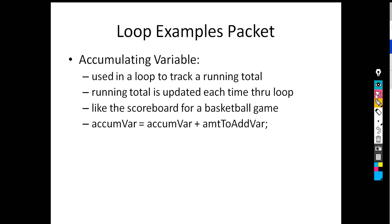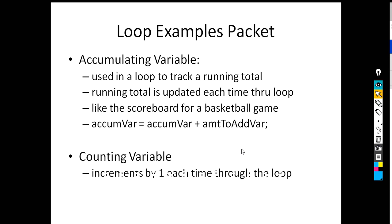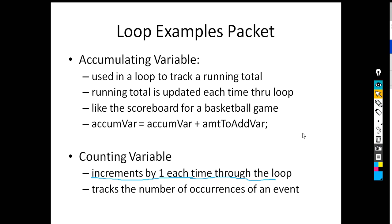Now let's go to a counting variable. There are two things to understand about it. Number one, it increments by one — any time you count something, you go 1, 2, 3, 4, not 2, 4, 6, 8. You add 1 each time through the loop. Now you could increment once each time through the loop and it could still be an accumulating variable, so we need the next point: the purpose of a counting variable is to keep track of the number of occurrences of an event.